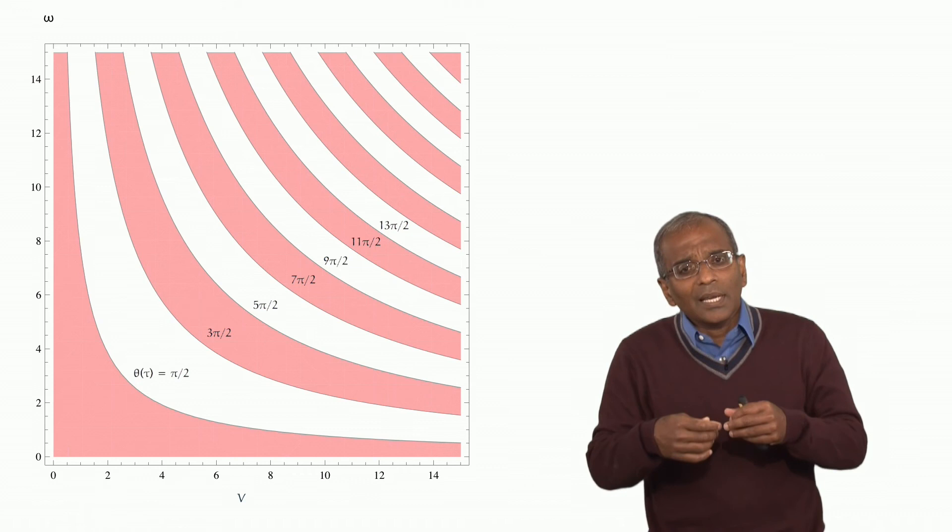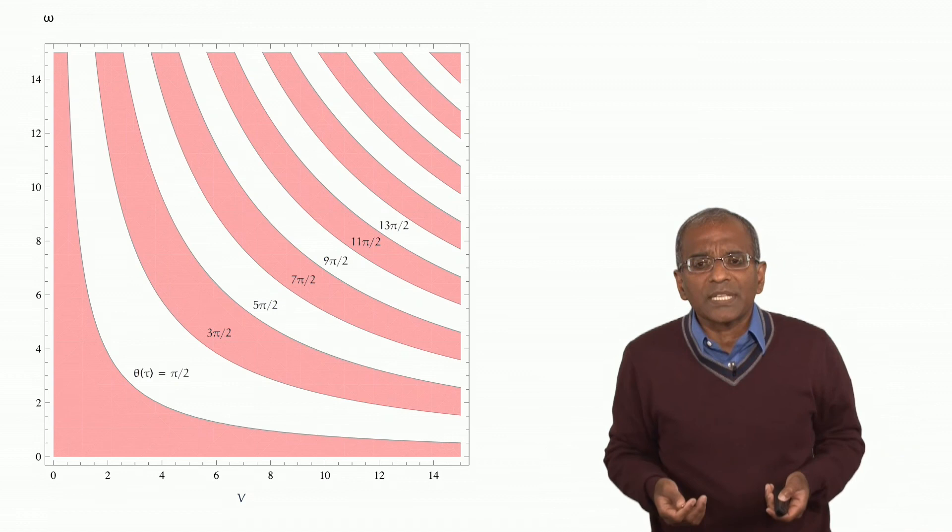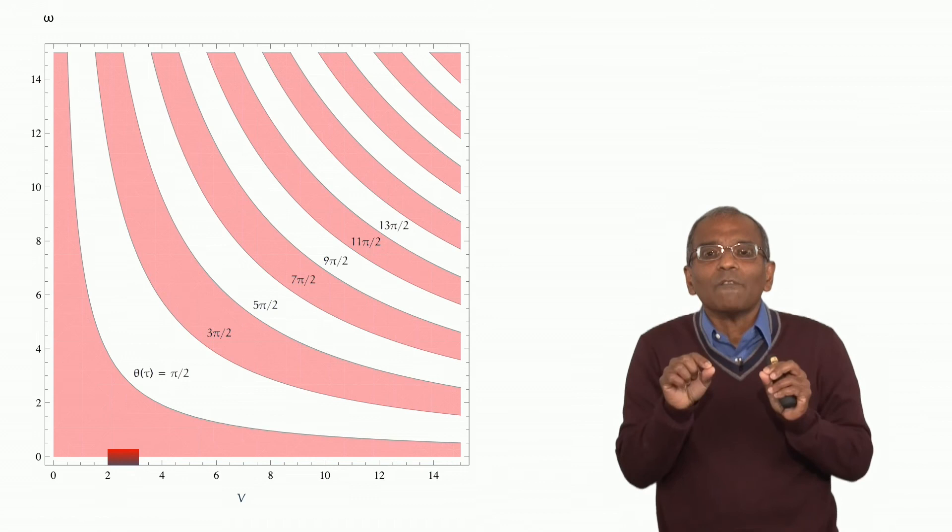Now, in terms of scientific units, in terms of metric units, that's about 2 to 3 meters per second. And so, in your figure, this corresponds to that narrow band of velocities from 2 to 3 meters per second.